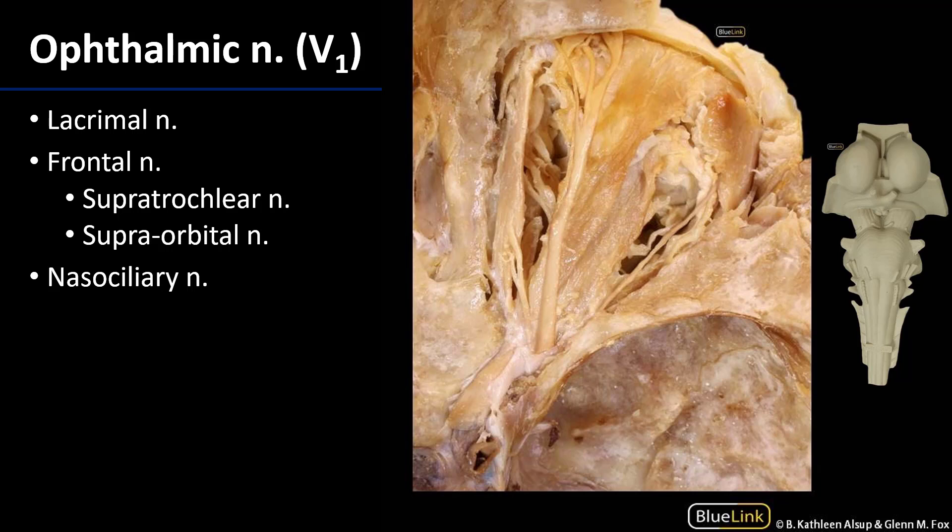The ophthalmic nerve, or V1, has three major branches: the frontal nerve, the lacrimal nerve, and the nasociliary nerve — each of which has its own branches. The lacrimal nerve moves out to the lacrimal gland for special sensory innervation. The preganglionic parasympathetic fibers come from the facial nerve, synapse in the pterygopalatine ganglion, and postganglionic fibers hitchhike to the lacrimal gland via branches of V2. The lacrimal nerve is the smallest branch of V1 and is found in the superior lateral margin of the orbit.